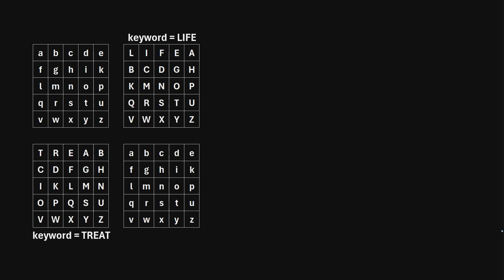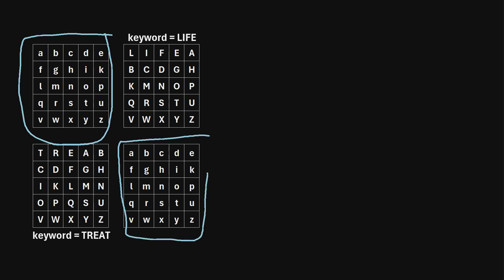In this video, I will provide a quick explanation of the four-square cipher. Here's the idea behind this cipher: we have four squares in which each square is five by five — five rows and five columns. The top left square and the bottom right square are lowercase letters of the alphabet from A to Z, excluding the letter J. Sometimes you'll see a variant where you exclude the letter Q, but for this example I'm going to exclude the letter J.